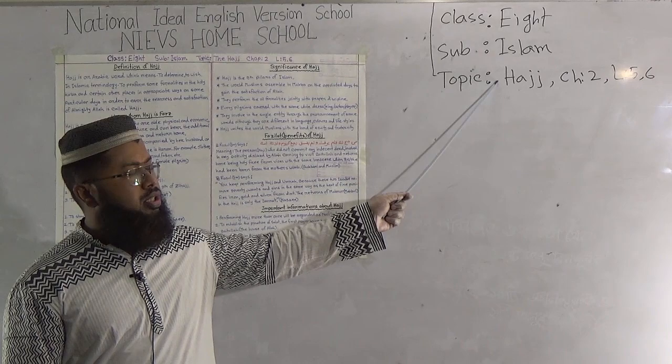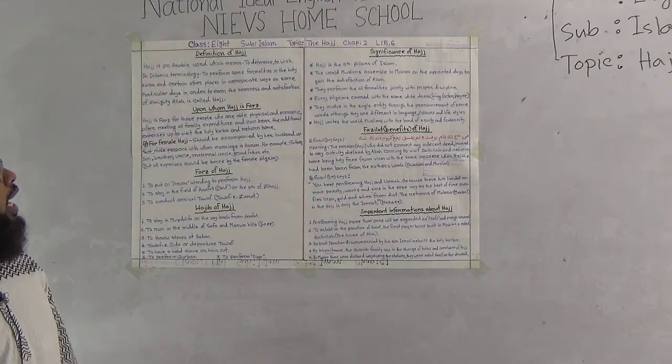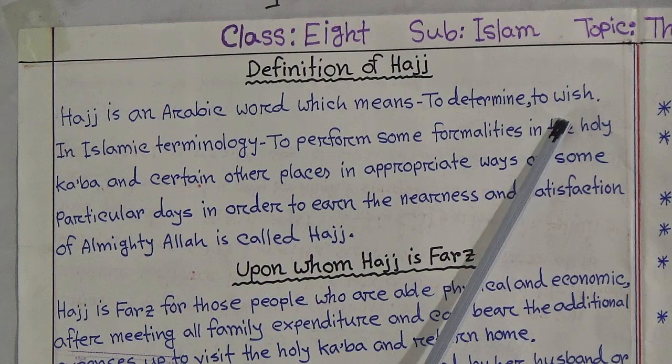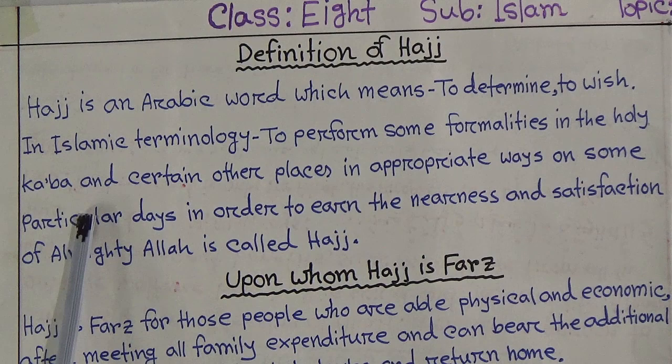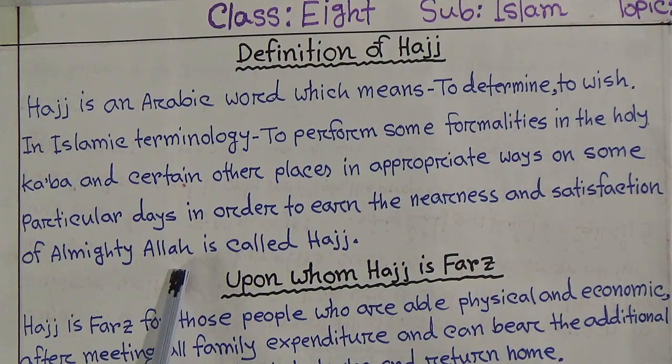Today our topic is Hajj, from chapter 2, lessons 5 and 6. Before starting, we have to know the definition of Hajj. Hajj is an Arabic word which means to determine, to wish. In Islamic terminology, to perform some formalities in the holy Kaaba and certain other places in appropriate ways on particular days in order to earn the nearness and satisfaction of Almighty Allah is called Hajj.